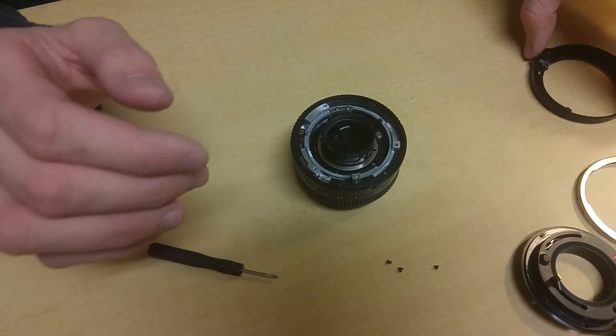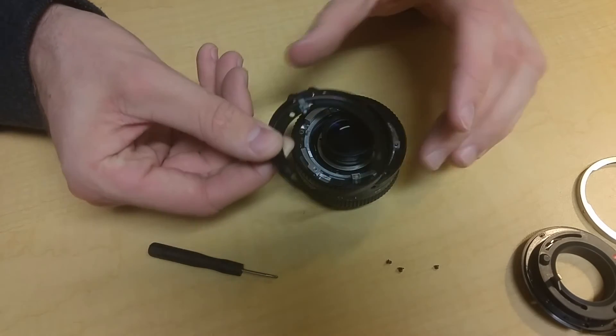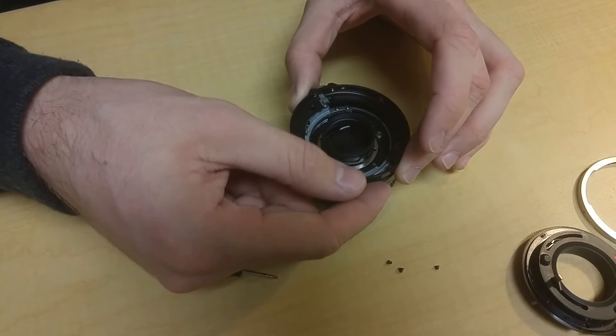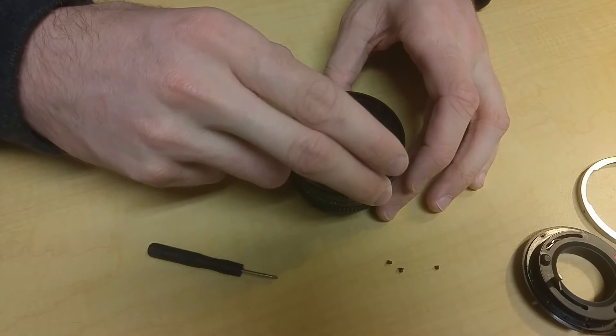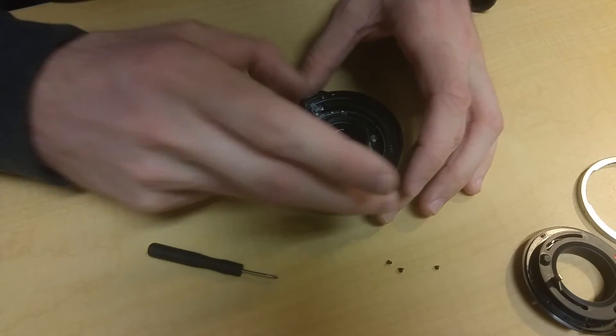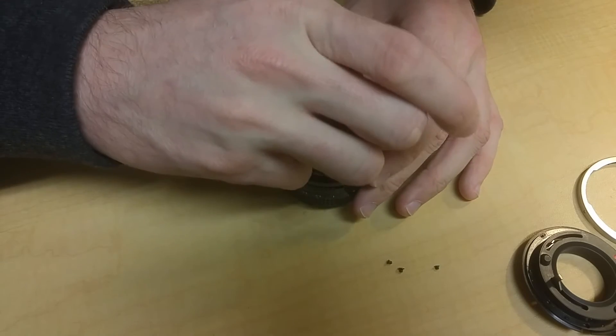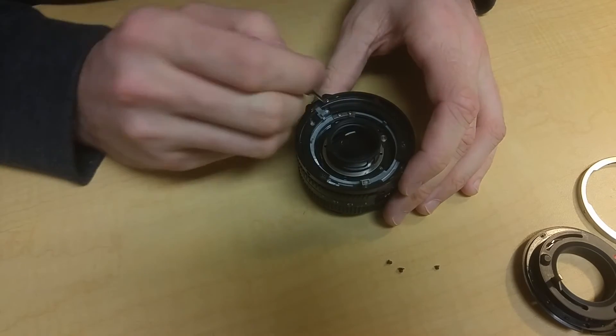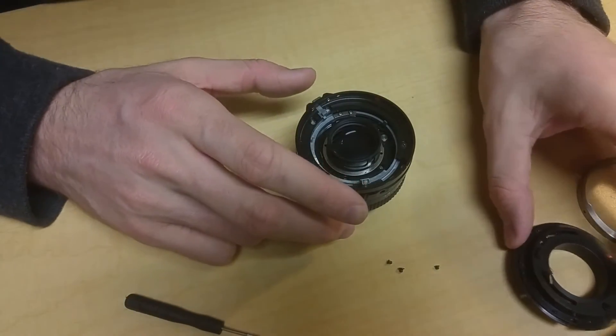And then now you want to take this part with the little button on it. You want to place it so this little latch right here is right where this little thing is, and you want to line up the screw holes. Just go ahead and screw that back in. And then you would screw this one back in, but yeah, I lost that screw.